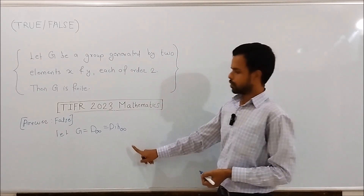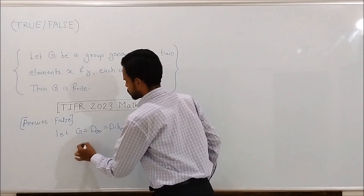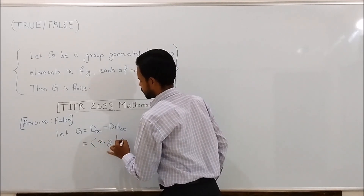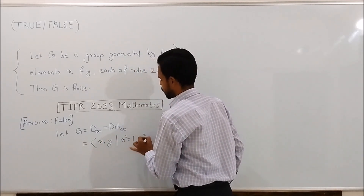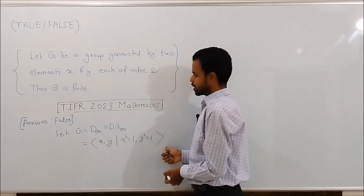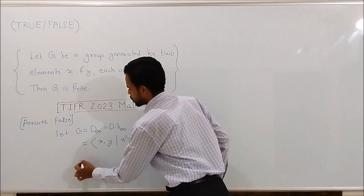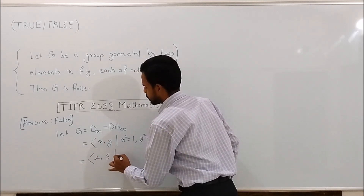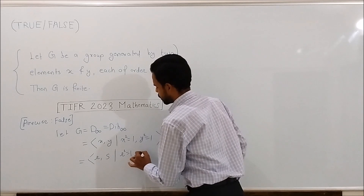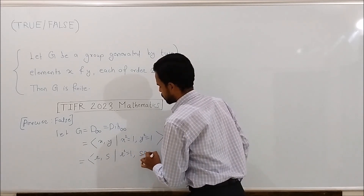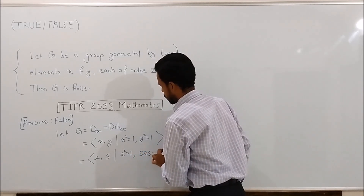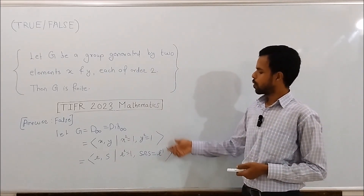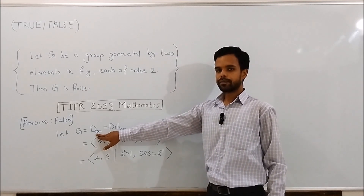This group has the representation: the group generated by x, y such that x² = identity and y² = identity. Another representation, which is most commonly used, is the group generated by r, s such that r² = identity and srs = r inverse.